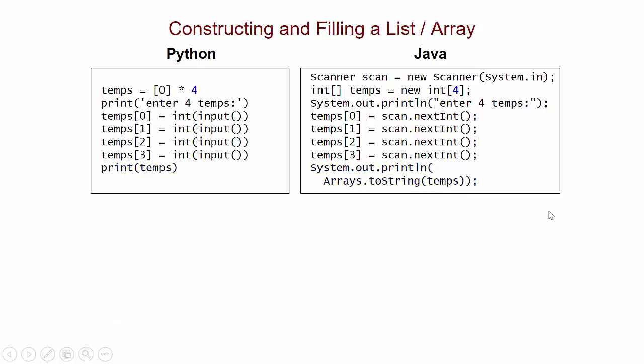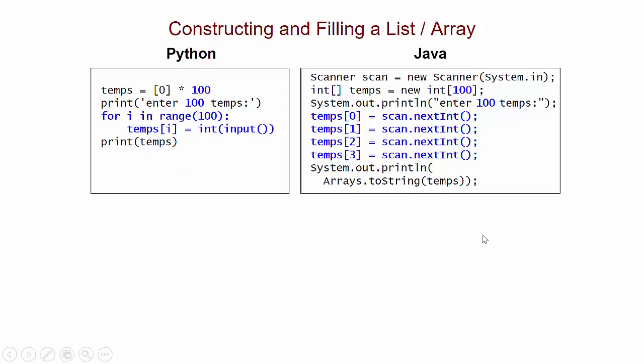Okay, now, what if instead of having four things that we want, we instead want 100, right? So we have to change our prompt, obviously, and the user's probably not going to be very happy with us to have to enter 100 values. But the more problematic thing here is we don't want to have to do 100 lines in which we call the appropriate function or method and assign. And so instead, we're going to use a loop,